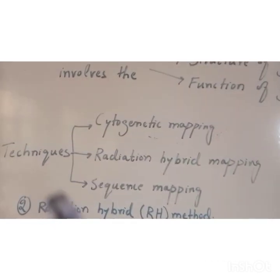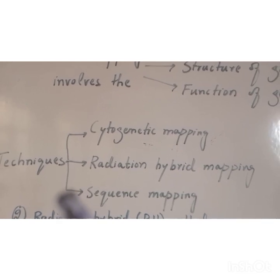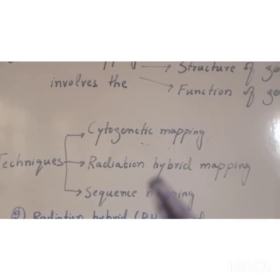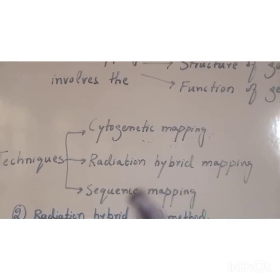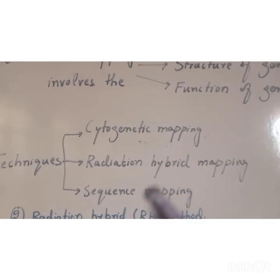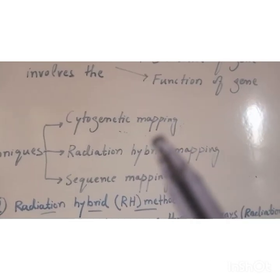Techniques used for chromosome mapping are cytogenetic mapping, radiation hybrid mapping, and sequence mapping. These three techniques are used for chromosome mapping. Number one is cytogenetic mapping.